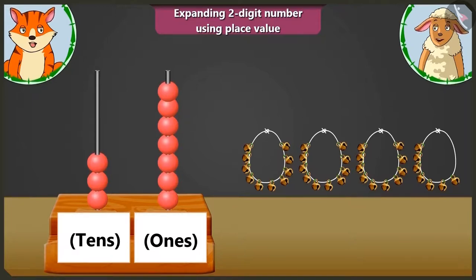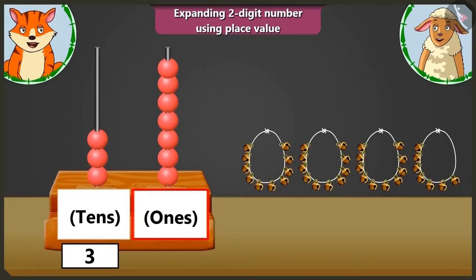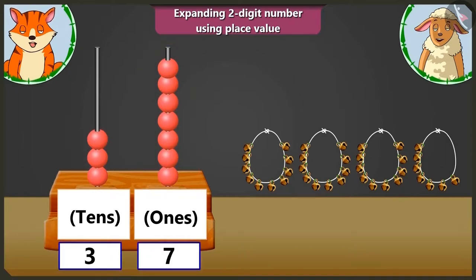Look, on this abacus, here in the tens box, there are one, two, and three beads available. So we will write that first. Now in the one's box, there are seven beads. So we have to write seven. Now the number it makes is thirty-seven.